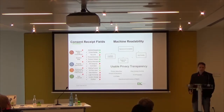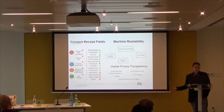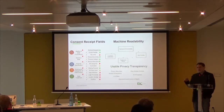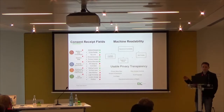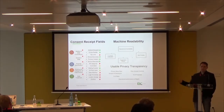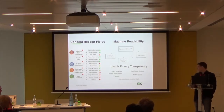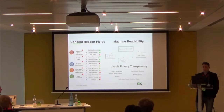When you start making privacy and consent records machine readable, you can start making them usable for people. Usable privacy transparency is what I call privacy metadata — things like: how many risks are there, how many purposes are there, how many people is this going to be shared with? People just want to know at a glance in a consistent way across platforms, across countries and companies. That's the operational performance of rights.